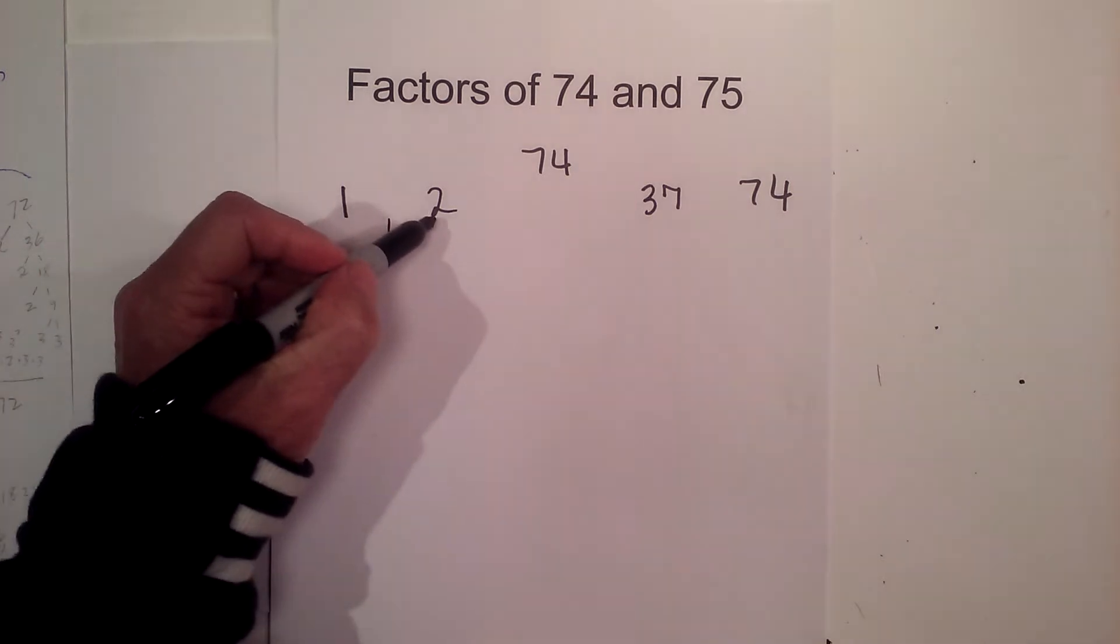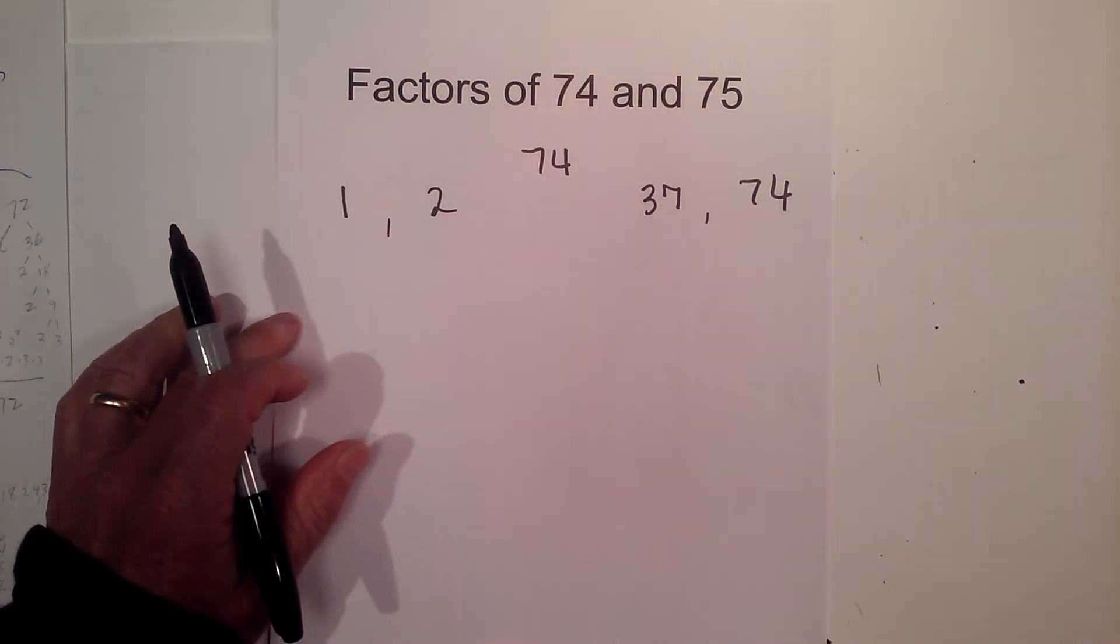So the factors of 74 are 1, 2, 37, and 74.